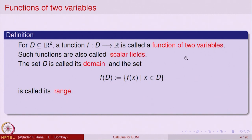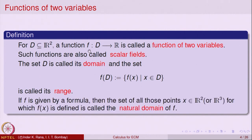One can also consider functions of more variables by taking D to be a subset of R³, R⁴, and so on, depending on how many inputs are in the analysis. We will discuss only functions of two variables, though most of the mathematics carries over to more variables. When a function is given by a formula, the set of all points x in R² for which that formula makes sense is called the natural domain of the function.